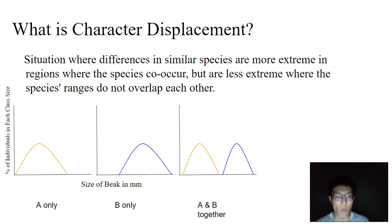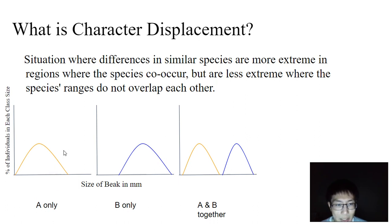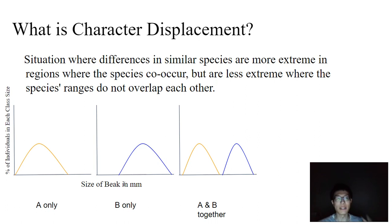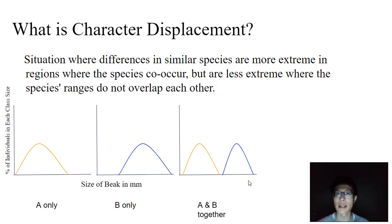One way to think about it is that when you have the species on their own on their isolated island, they have a pretty wide range in terms of their characteristic. But when they're found together, there might be competition if you have a beak size towards the center. So the birds — in this case we're talking about beaks, so it's birds — they will evolutionarily displace themselves in terms of their characteristics to feed on different niches. So maybe birds with smaller beak sizes are going to feed on smaller seeds, and birds with larger beak sizes feed on larger seeds.